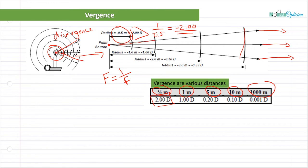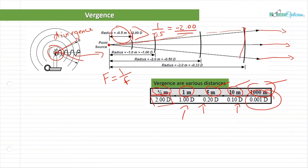Notice how as we get further and further away from the point source, it's getting closer and closer to flat — we're going from 1 meter to 5 meters to 10 meters to 1,000 meters. The dioptric value is getting closer and closer to 0. So there is no vergence. The amount of divergence or convergence — the amount of bending, moving away from a point or coming to a point — is measured in diopters, just like all our powers are. The further away we move from the point source, the less vergence there is, until at 0.001 diopters, we may as well call this parallel.